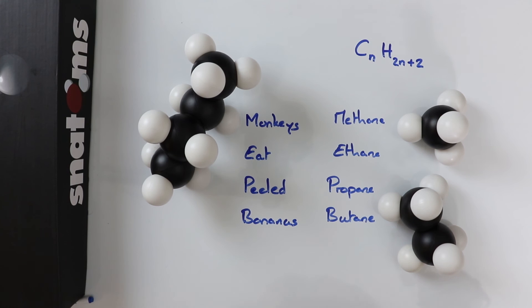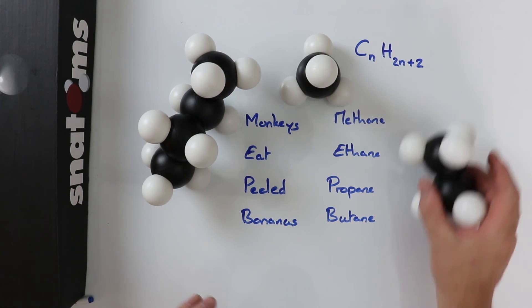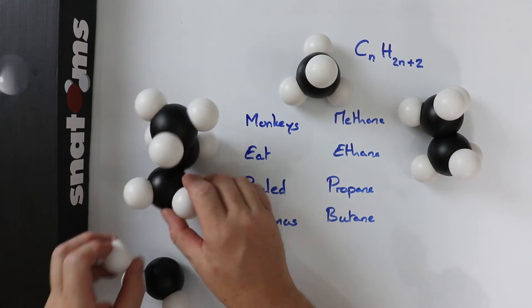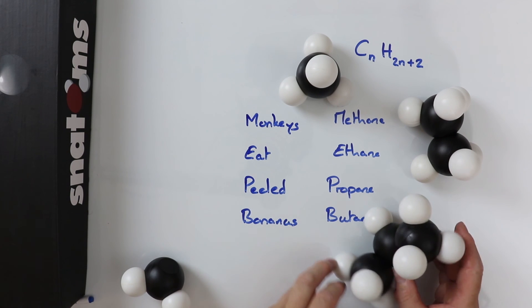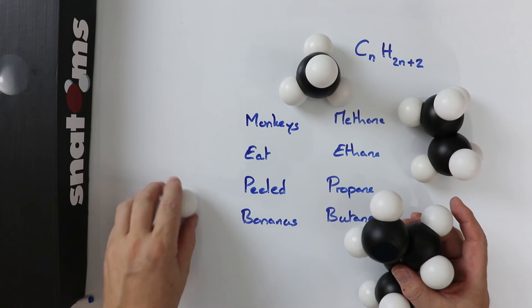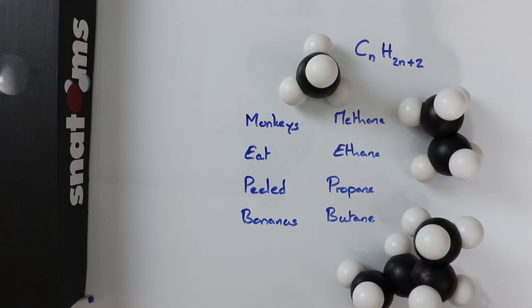To summarize: the alkanes are methane, ethane, propane with three, and butane with four. They all come from crude oil and they're only made from carbon and hydrogen.